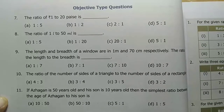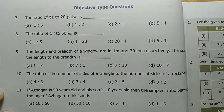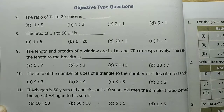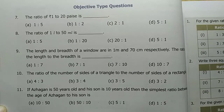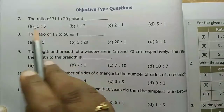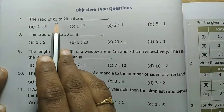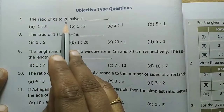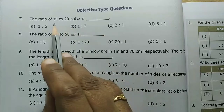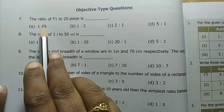Hello friends, welcome to VM E2C channel. In our channel, 6th standard Maths Term 1, 3.1 objective type questions. First one: the ratio of rupees 1 to 20 paise is dash.